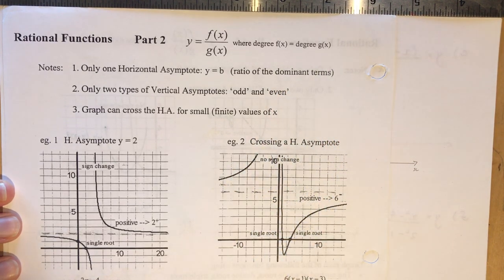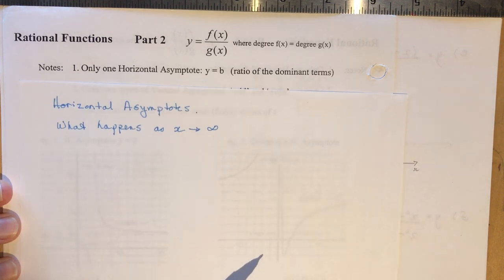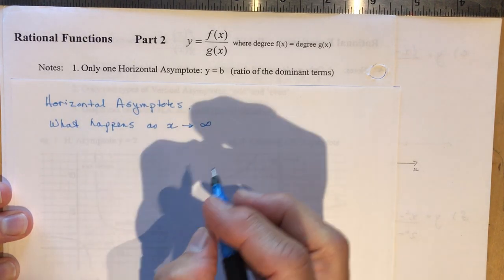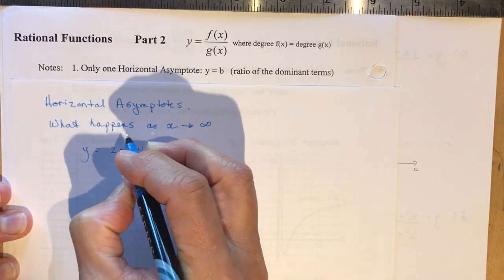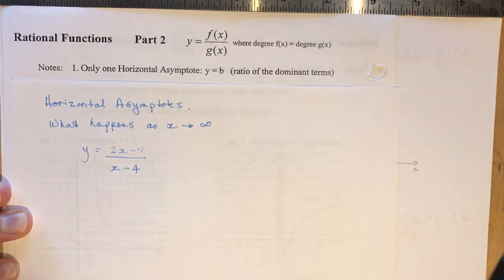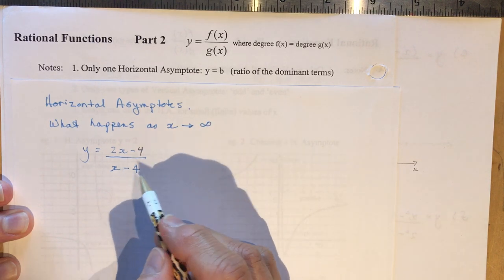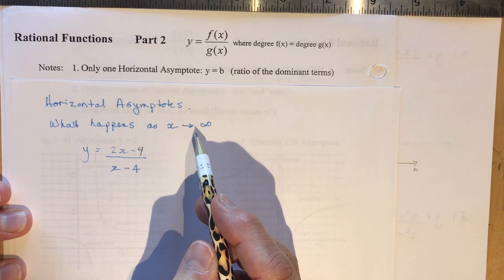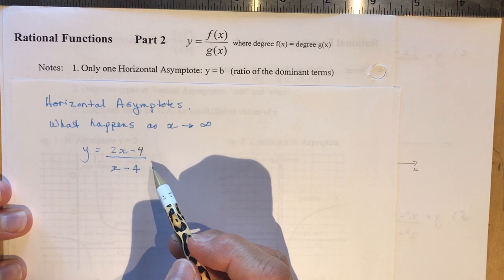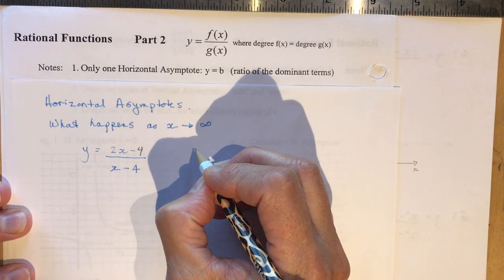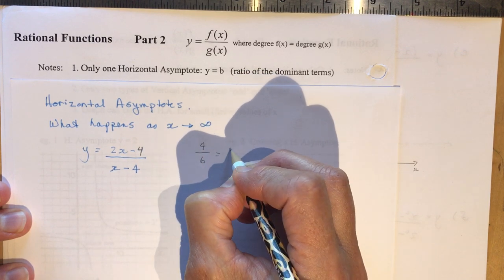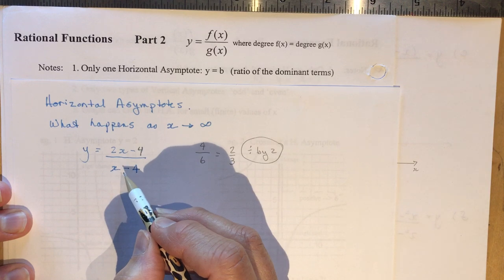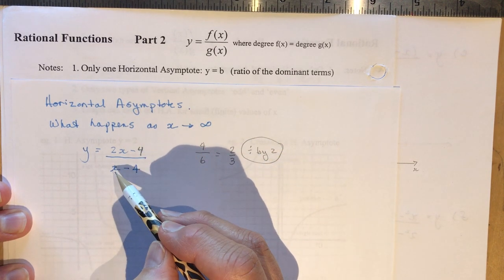I want to explain this more carefully because your textbook doesn't talk about this at all. Let's discuss horizontal asymptotes. The question is: what happens as x approaches infinity? If I have a function like 2x minus 4 over x minus 4 and I ask what's the horizontal asymptote, I want you to tell me what happens as x gets really, really big. You could start plugging in numbers, but that's a lot of work. Just as you can simplify a ratio like 4 over 6 to 2 over 3 by dividing by 2, I can divide every term by the variable with the largest degree.